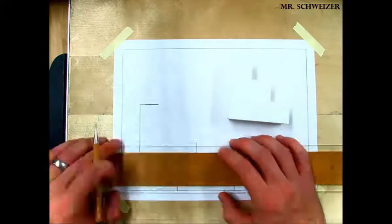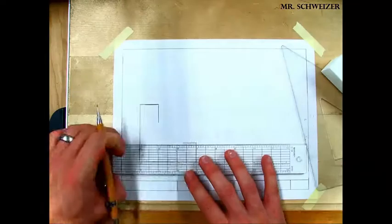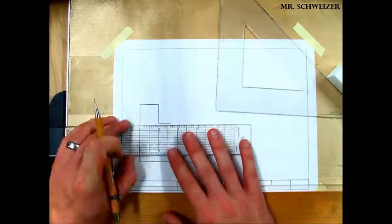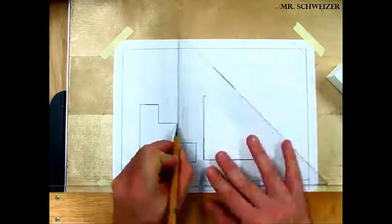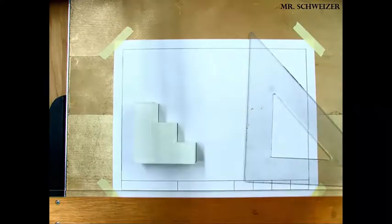You're going to repeat this process until the entire front side of the object is complete. Since I drew my front in full scale, if I put my object right on my drawing, it should line up perfectly.